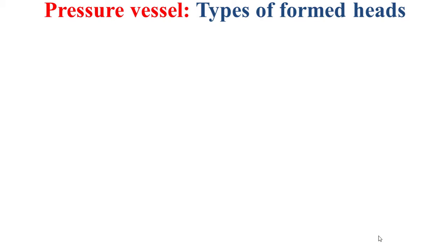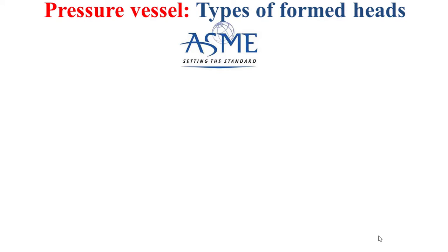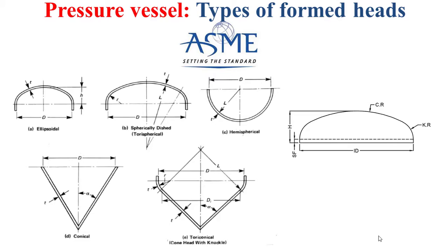First of all, it should be remembered that there are several types of formed heads. Based on the American Society of Mechanical Engineers ASME standards, we have principally five types of formed heads: the ellipsoidal, the tori-spherical (called also spherically dished), the hemispherical, the conical, and the tori-conical formed heads. Each type of formed head is characterized by some characteristic dimensions.